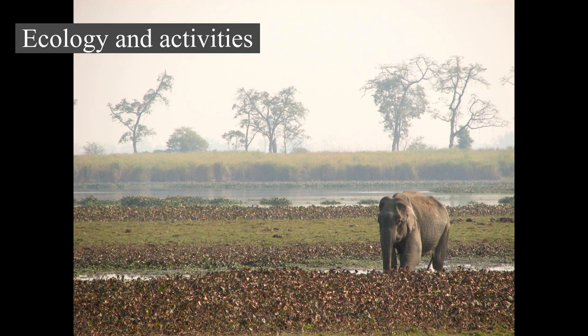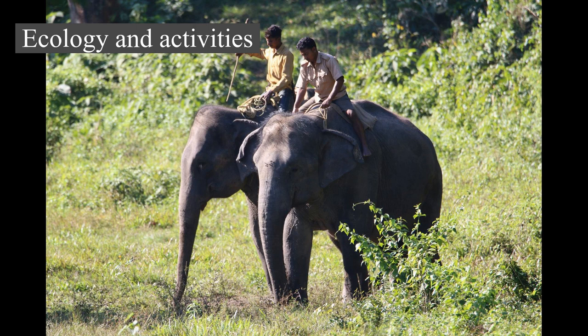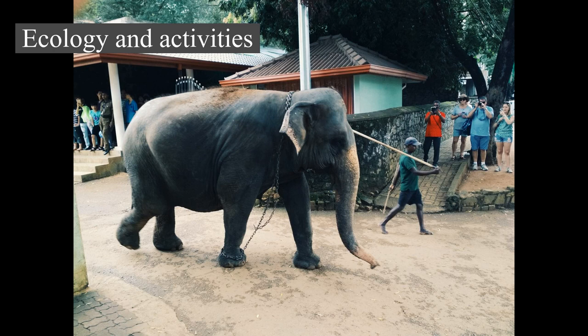Both males and family groups typically move 10–20 km (6–12 mi) a day, but distances as far as 90–180 km (50–112 mi) have been recorded in the Etosha region of Namibia. Elephants go on seasonal migrations in search of food, water, minerals, and mates. At Chobe National Park, Botswana, herds travel 325 km (200 mi) to visit the river when the local water holes dry up.